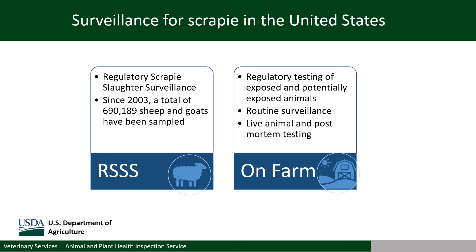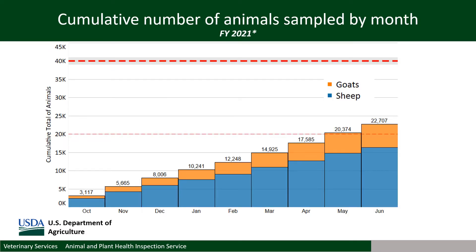Surveillance for scrapie in the United States currently comprises the Regulatory Scrapie Slaughter Surveillance, or RSSS, program initiated in 2003, and on-farm surveillance. As of the end of June of this year, 690,189 sheep and goats have been sampled through the RSSS program. Fewer animals are tested through the on-farm program, which includes regulatory testing of exposed and potentially exposed animals, as well as routine surveillance. Through the on-farm surveillance program, live animals are tested via rectal or third eyelid biopsies, and animals that die on-farm are tested using brain and lymph node tissue. The goal of the scrapie program is to test at least 40,000 animals a year. We are a little behind this year overall on sampling, primarily due to the COVID pandemic limiting access to animals for sampling.